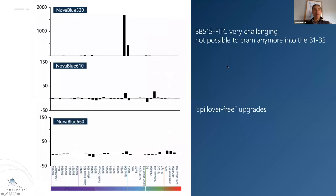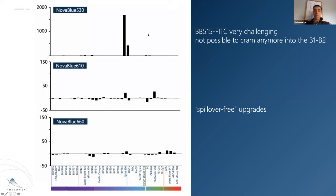The Nova Blue single-color drop-in showed a spillover spreading increase for BB515 and FITC because we're cramming the B1 and B2 channels. BB515 and FITC are very challenging together, which is why previous panels put them on alternating phenotypes. In this case, it's just not possible to cram both into B1 and B2. In our panel design, we dropped BB515 out to ameliorate this problem, moving the antigen elsewhere, which also removes other spillover characteristics in the violet from the brilliant blue dyes.